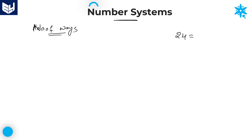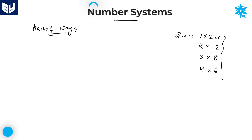If I want to write 24 as a product of two factors, I can write this number as 1×24, or 2×12, or 3×8, or 4×6. All of these are called number of ways. So there are four ways to express 24 as a product of two factors.